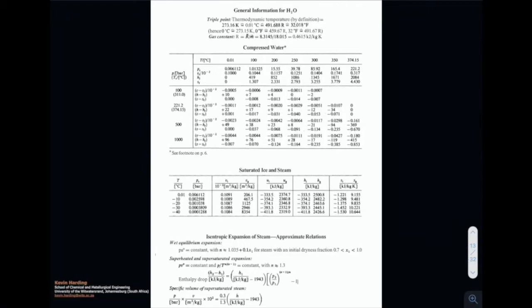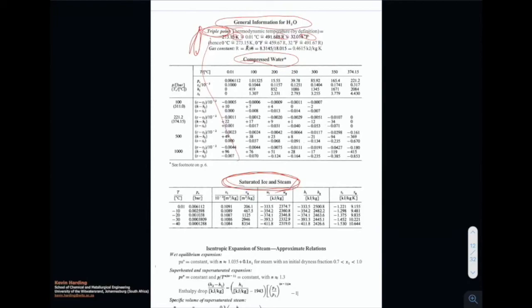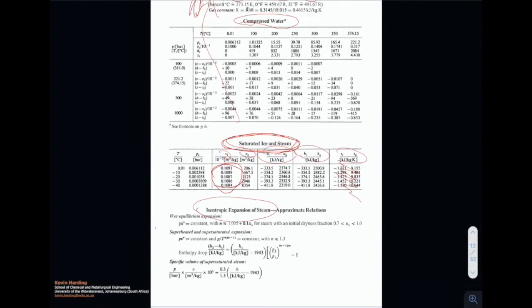The last page in this video covers general information for water: the triple point, unit conversions (Kelvin to Rankine to Fahrenheit), information about compressing water, and saturated ice and steam. There is data on the triple point with internal energy, enthalpy, specific volume — the subscript I is for ice, representing the solid phase, along with repeat gaseous values. The last item is isentropic expansion of steam, which you do not need in this course but will need in your third year courses.